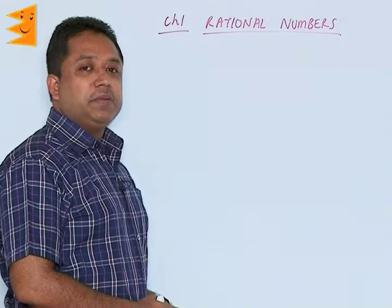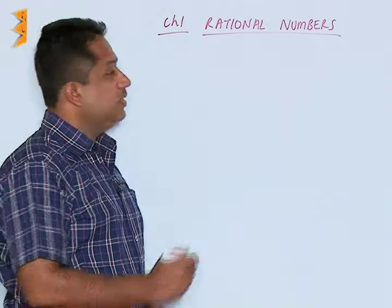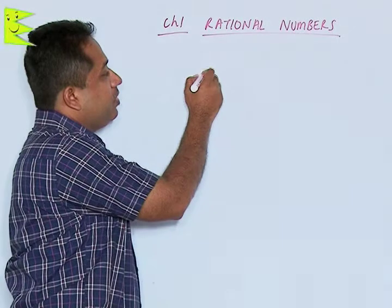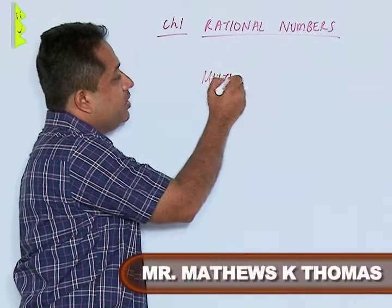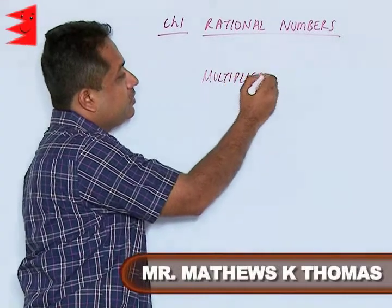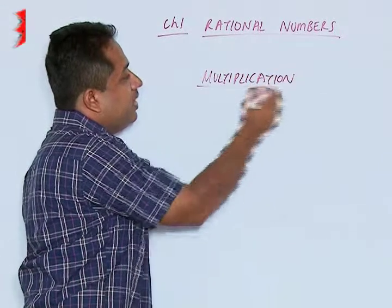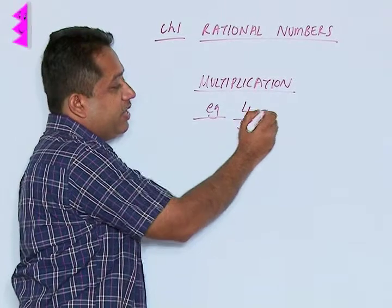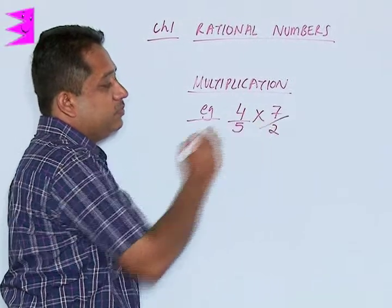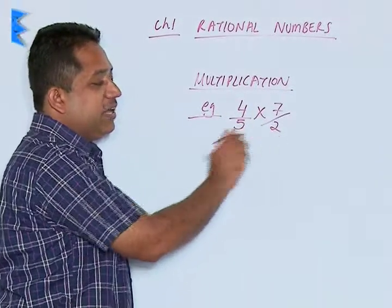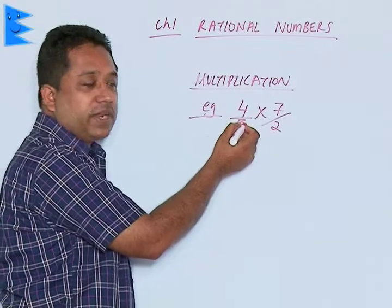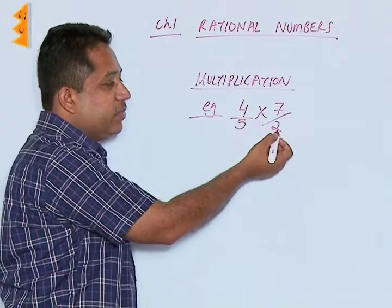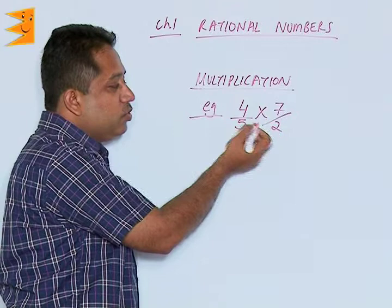Now let's see how to multiply and divide rational numbers. Let's take an example of multiplication: multiply 4 by 5 and 7 upon 2. Here we need not take any LCM as in addition or subtraction. It's a simple case of multiplication, but we can simplify by seeing whether any numerator term can be canceled with any denominator term.